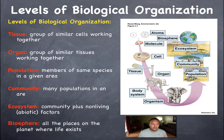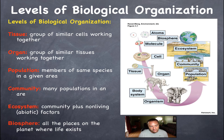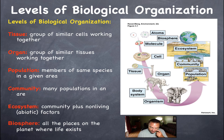A bunch of elephants living in the same area is a population. A population is defined as the members of the same species living in a given area. Over here you can see a population of elephants in that area.